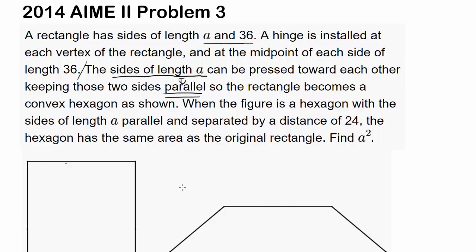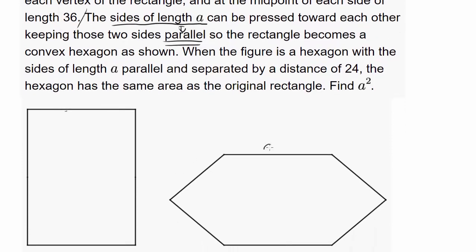So the rectangle becomes a convex hexagon as shown. And now we know that these sides are the sides with length A because they have to be parallel.